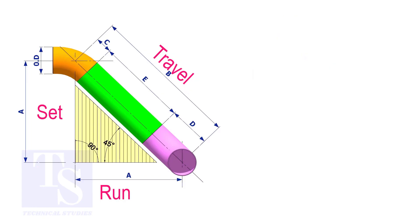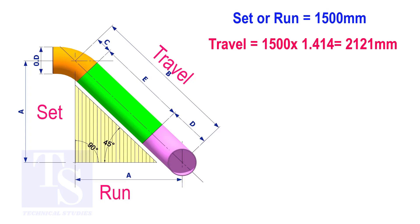Try another example. Suppose the value of the set or the run is 1500 millimeters. The value of the travel will be 1500 multiplied by 1.414, which equals 2121 millimeters.